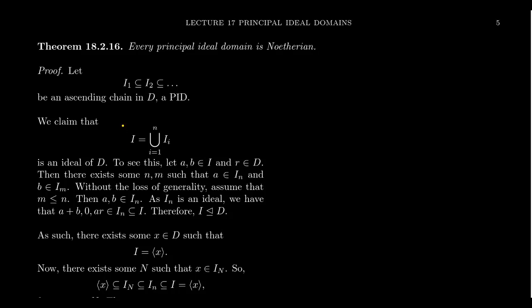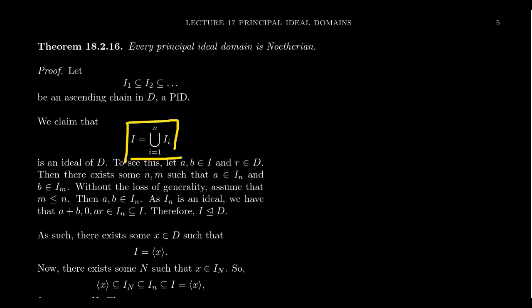The bulk of the argument is going to come from the following claim: if we have an ascending chain of ideals, and we take the union of that entire chain, that itself is an ideal inside of the ring. This is a very important result, and I don't even need the principal ideal hypothesis to make this — this is actually just true for arbitrary rings. If you take the union of any ascending chain of ideals, that itself will be an ideal. Similarly, you can also take the intersection of a descending chain of ideals — that will also be an ideal. But intersections of ideals are always ideals, so that one's not very surprising. Unions of ideals in general are not ideals, but if we take the union of an ascending chain, that is always an ideal.